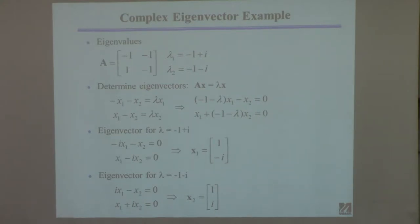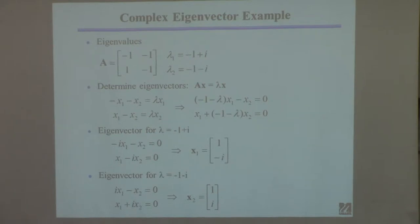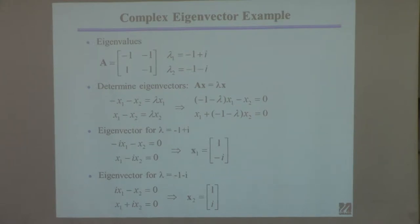Those are two equations. The first case is lambda 1 and the second case is lambda 2 — I just didn't write the subscript on the lambda. I'm going to use the first eigenvalue and plug it into those two equations. There are a lot of minus signs: you get minus lambda making a plus one that cancels, leaving a minus i. You plug in the lambda into this term and get something very similar.